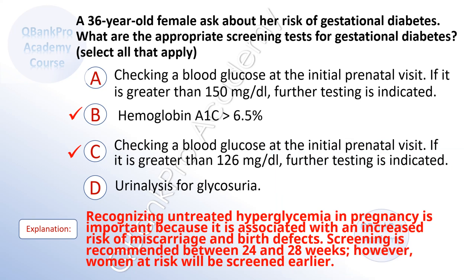The correct answer is B, hemoglobin A1C greater than 6.5%, and C, checking a blood glucose at the initial prenatal visit — if it is greater than 126, further testing is indicated. Recognizing untreated hyperglycemia in pregnancy is important because it is associated with an increased risk of miscarriage and birth defects. Screening is recommended between 24 and 28 weeks; however, women at risk will be screened earlier.